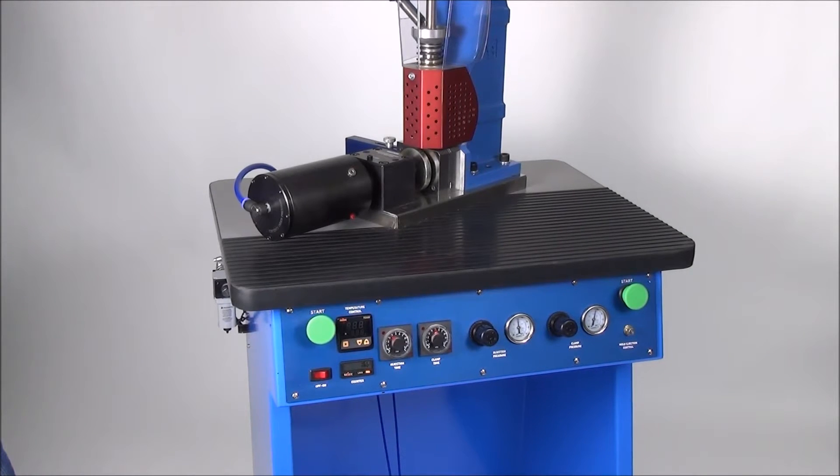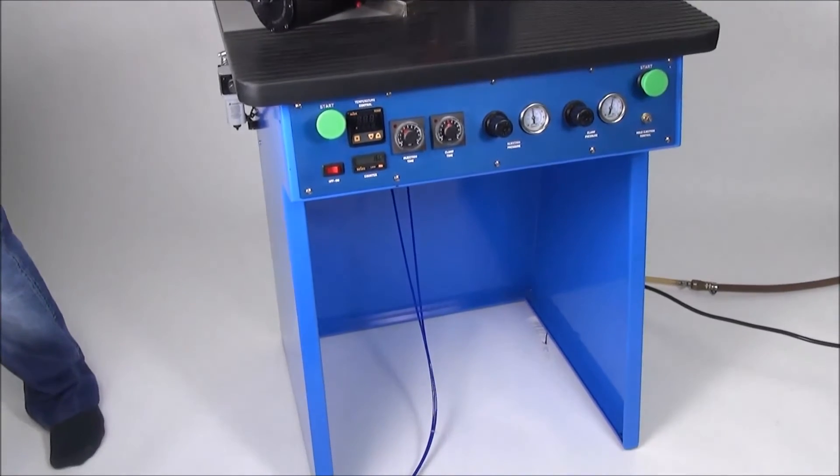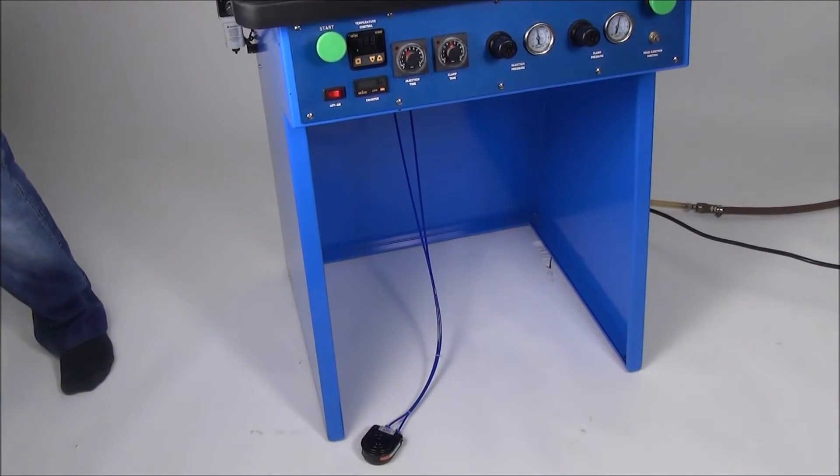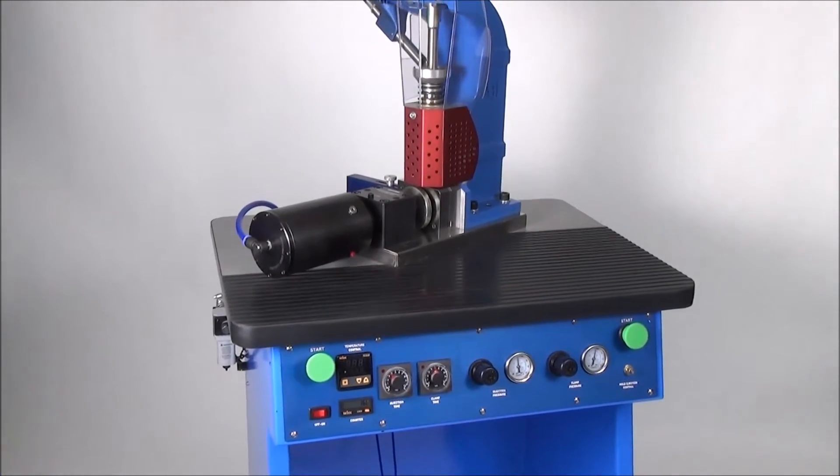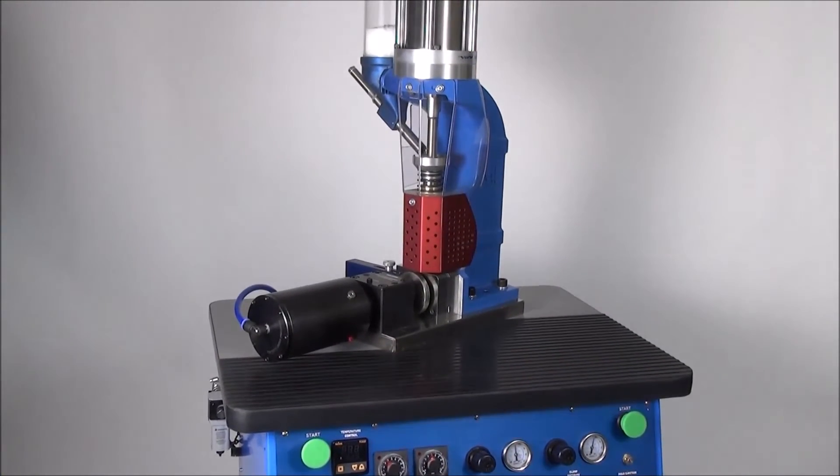The AB400 is a floor model plastic injector unit. It is a sit-down ergonomically designed unit weighing approximately 200 pounds or 91 kilograms. It is still very portable and requires no permanent installation.